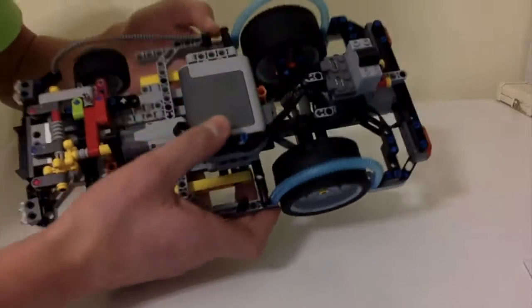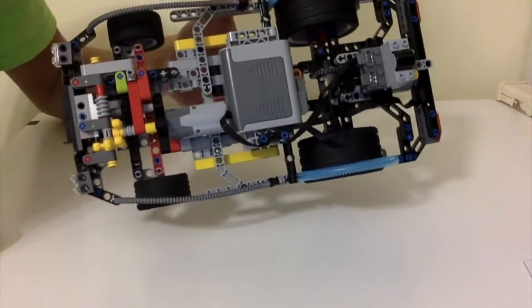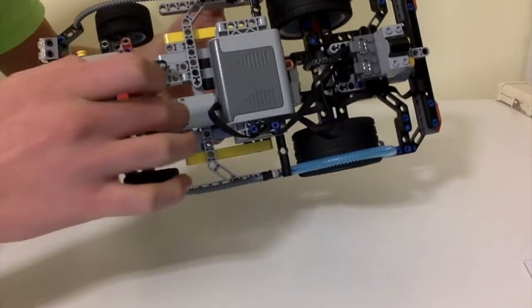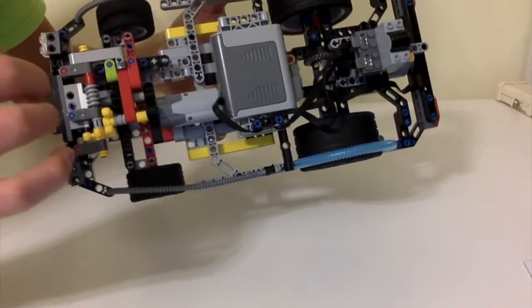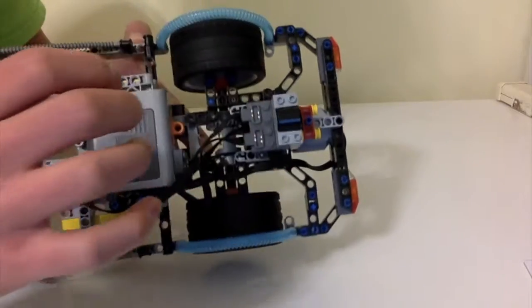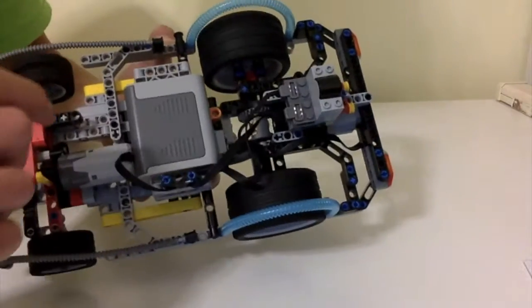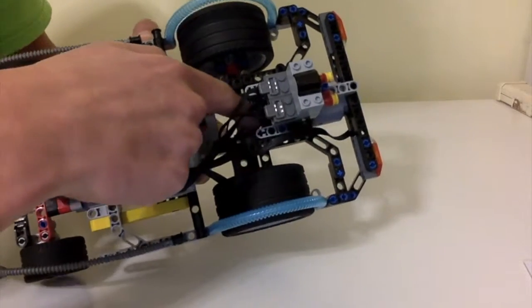So from the top it looks something like this. As you can see, I have the battery box, the turning mechanism, the RC receiver, and you can see the motor that drives the wheels.